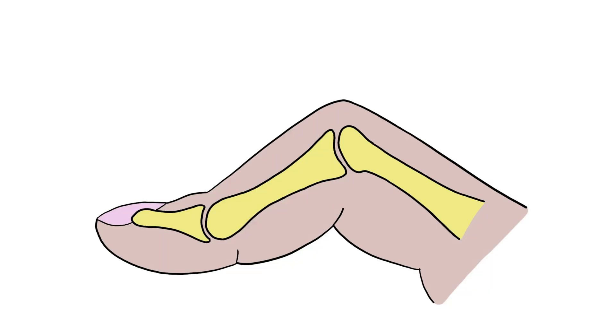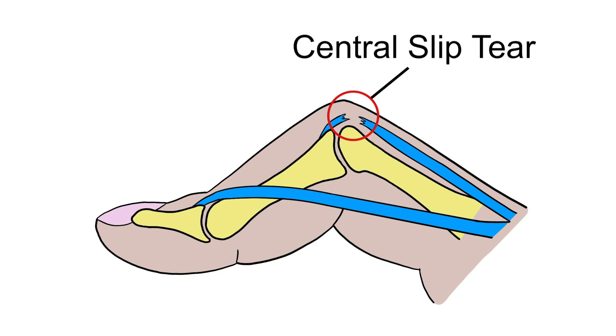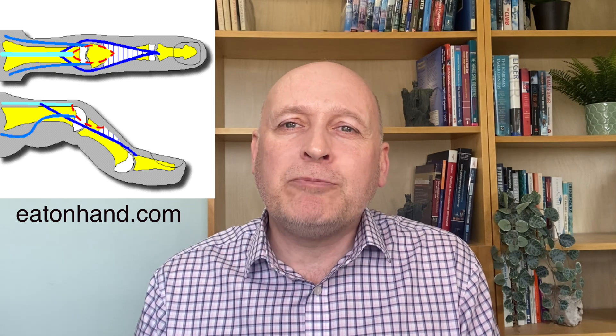A boutonniere deformity is pretty much the opposite of a swan neck. Instead of hyperextension of the PIP joint, we have a bent position of the PIP, and instead of the DIP joint being flexed, it is now hyperextended. A boutonniere deformity is caused by an injury to part of the extensor tendon called the central slip, which is responsible for straightening the PIP joint. Without it, the PIP joint falls into a bent position and you can't straighten the finger. The injury creates a hole in the central slip which the head of the proximal phalanx bone can push through — a bit like a button pushing through a buttonhole — which is exactly where it gets its name, as boutonniere means buttonhole in French.